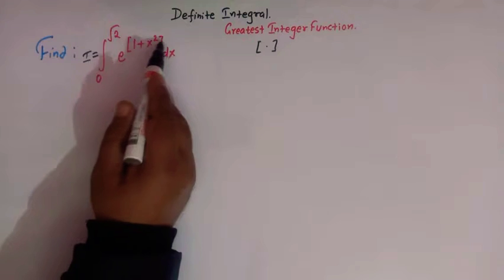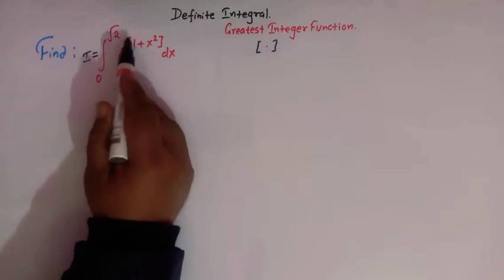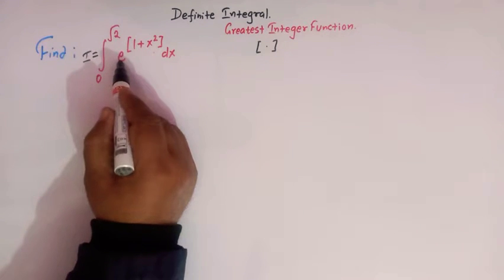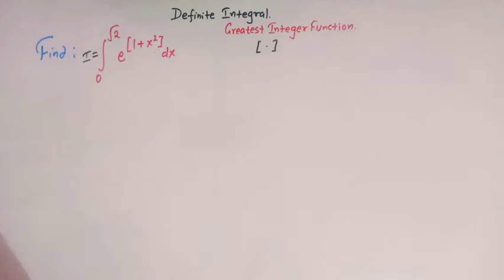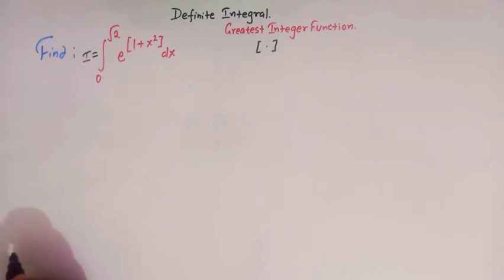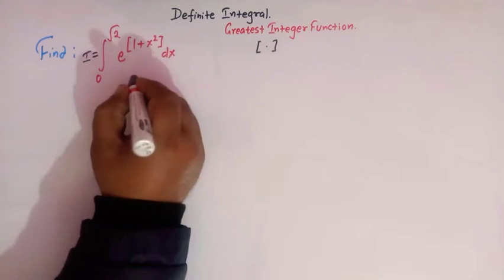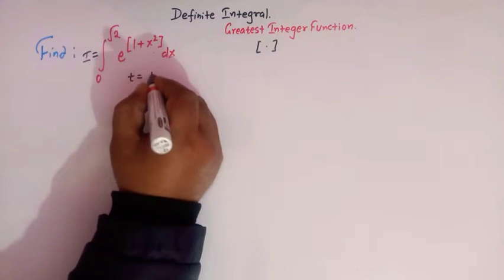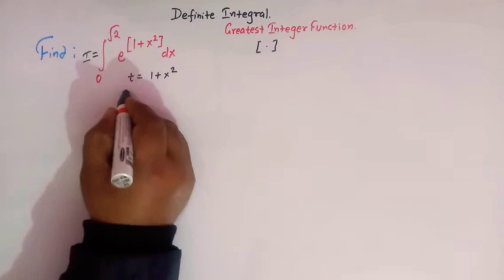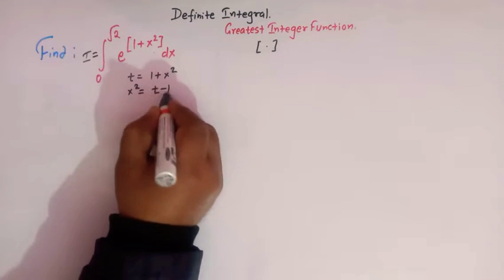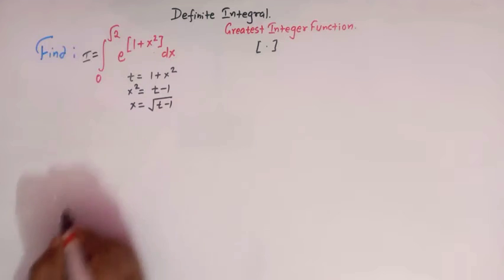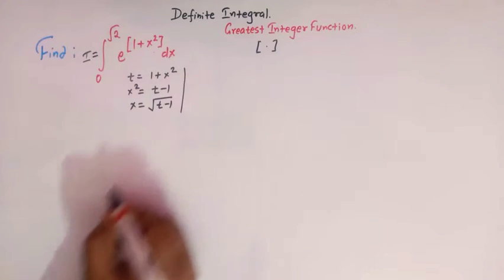Here we see that we have the greatest integer function as a power of e. So what we will do here is make use of the method of substitution and let us put t equal to 1 plus x squared. So when t equals 1 plus x squared, we have x squared equal to t minus 1 and x equal to square root of t minus 1. And let us change the limits accordingly.